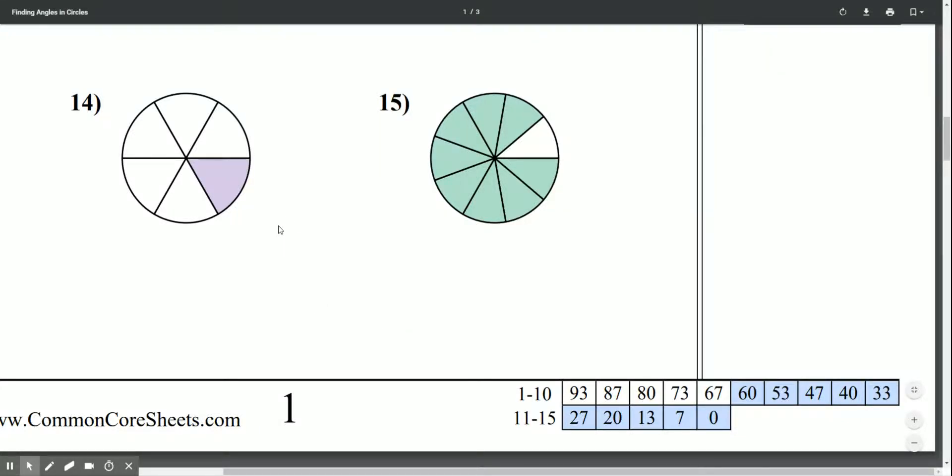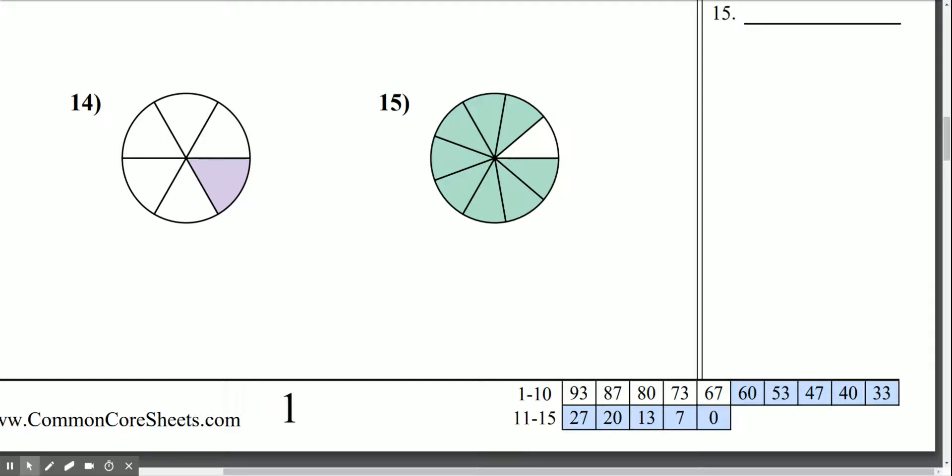We can use what we know about circles to figure out the angles of a circle. To go all the way around a circle is 360 degrees. Let's look at this first example.